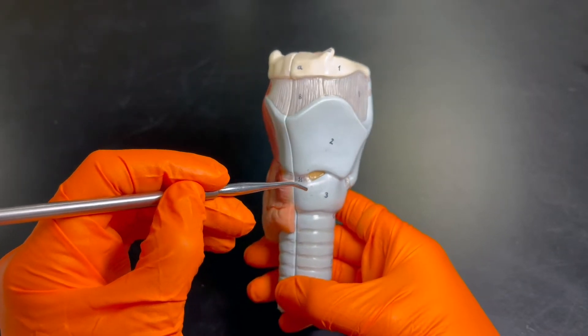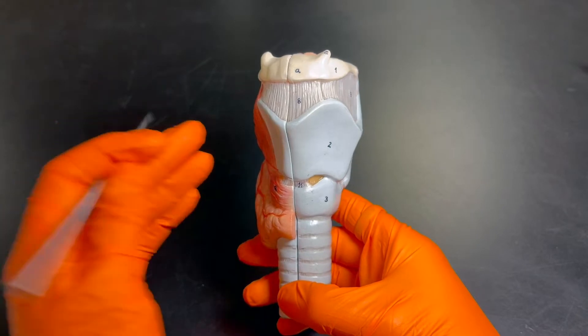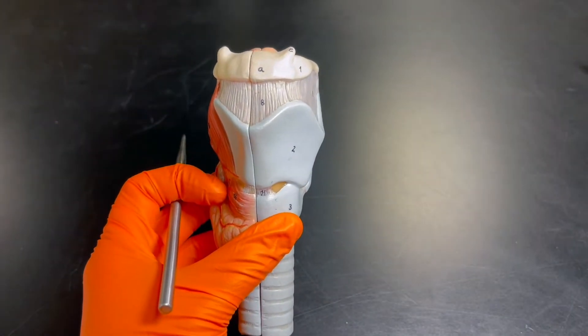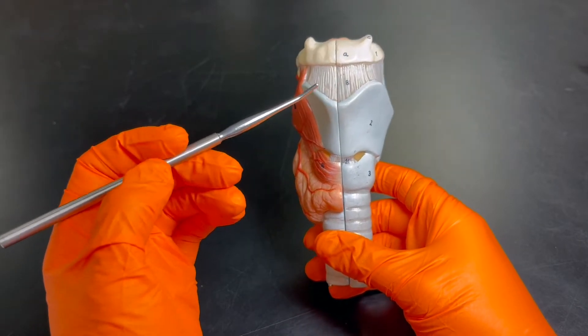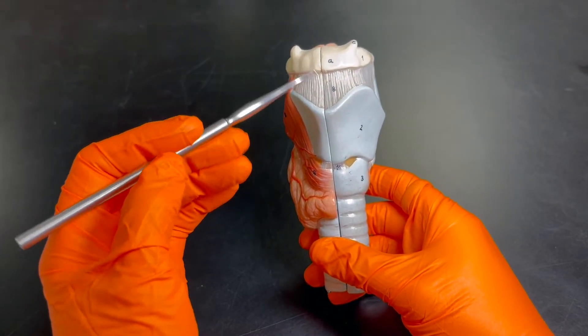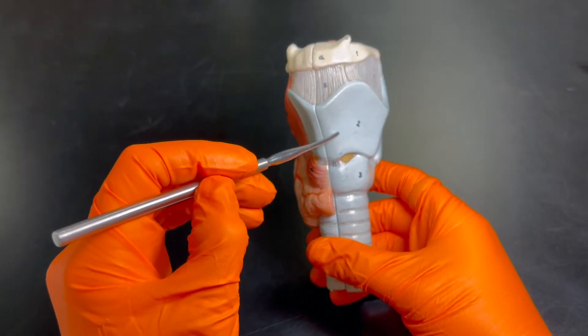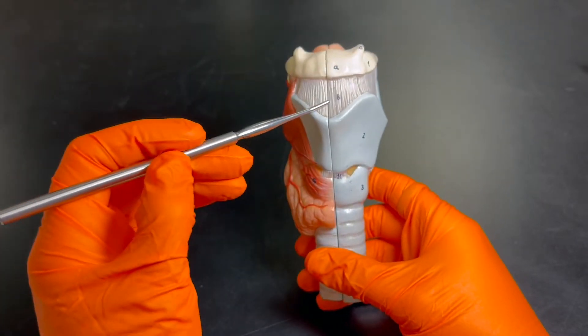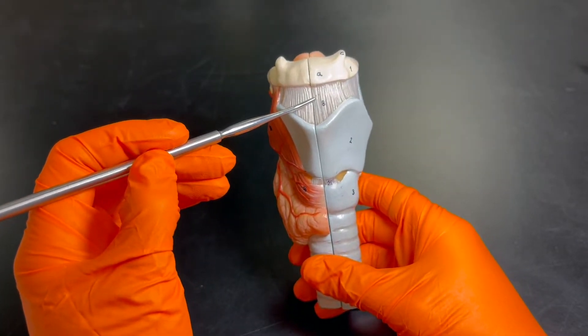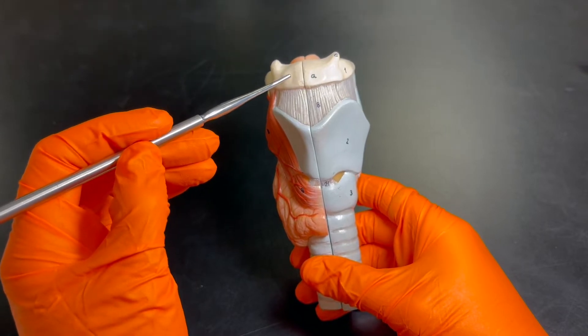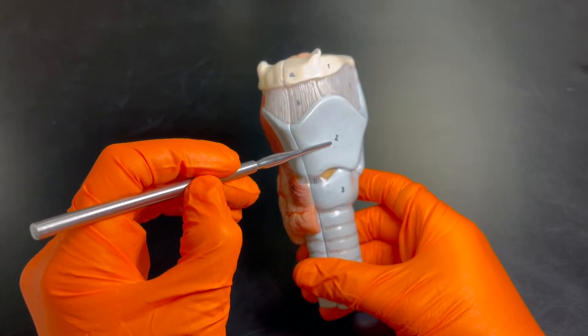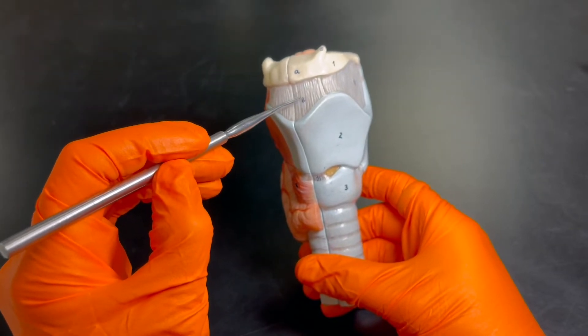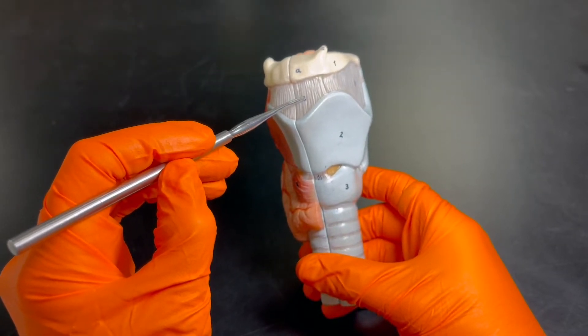So once we have these three main parts - hyoid bone, thyroid cartilage, and cricoid cartilage - I think it's easier to then name the membranes we have here. The membranes are going to be basically compound words that are made up of the other structures that surround it. So this one right here, which is in between the hyoid bone and the thyroid cartilage, is called the thyrohyoid membrane.